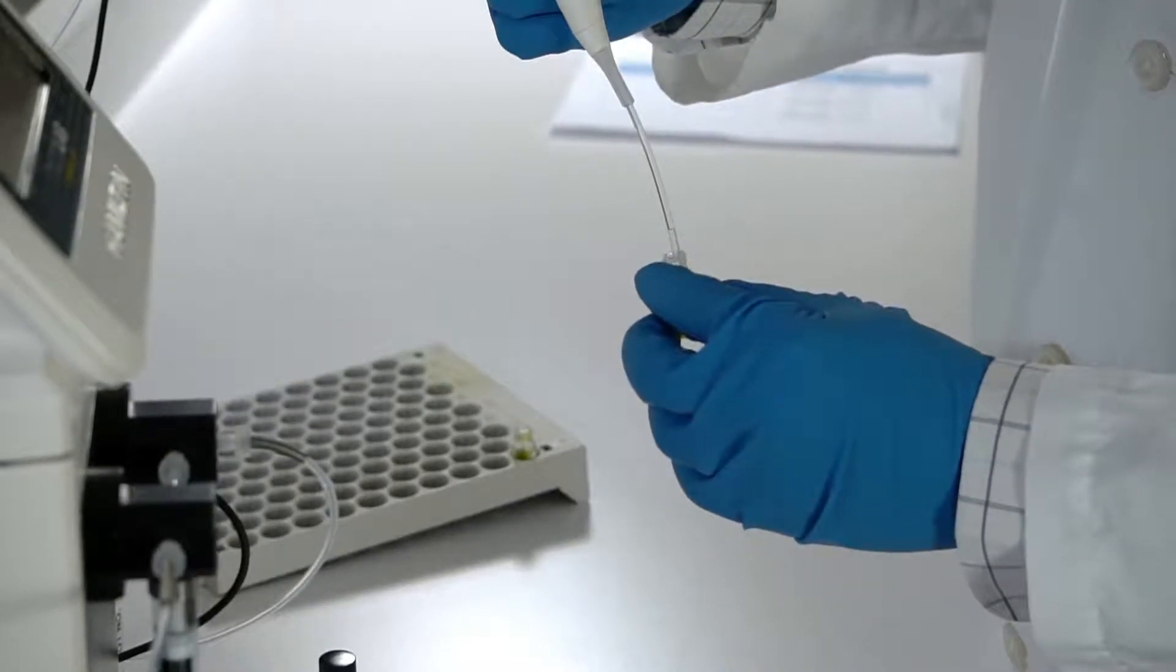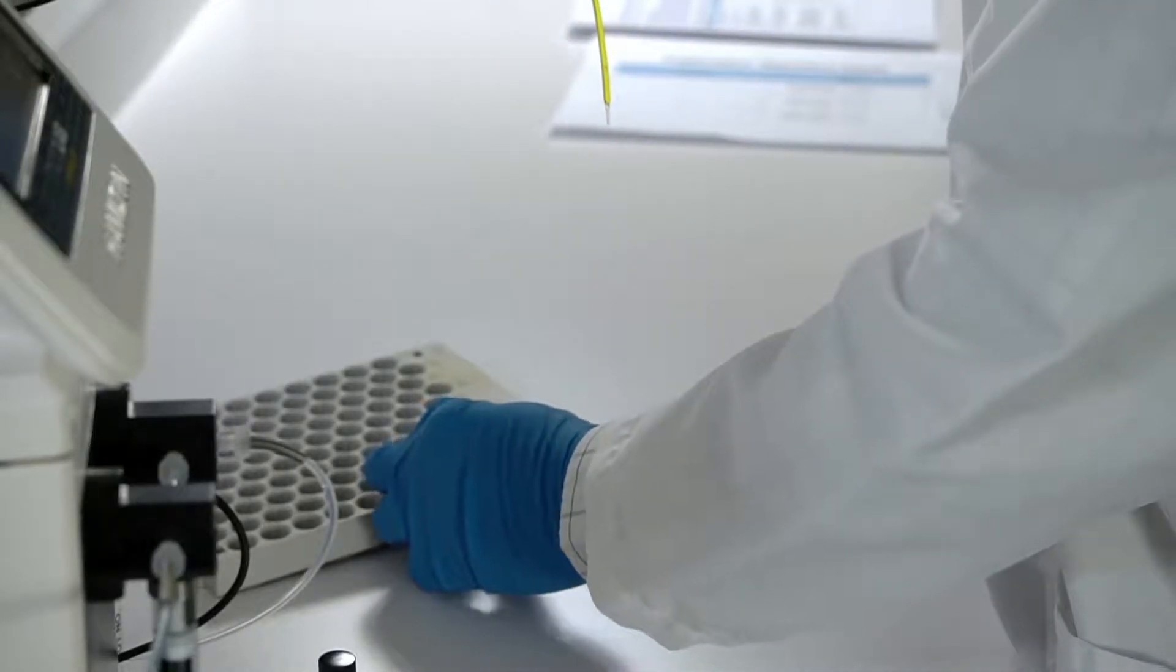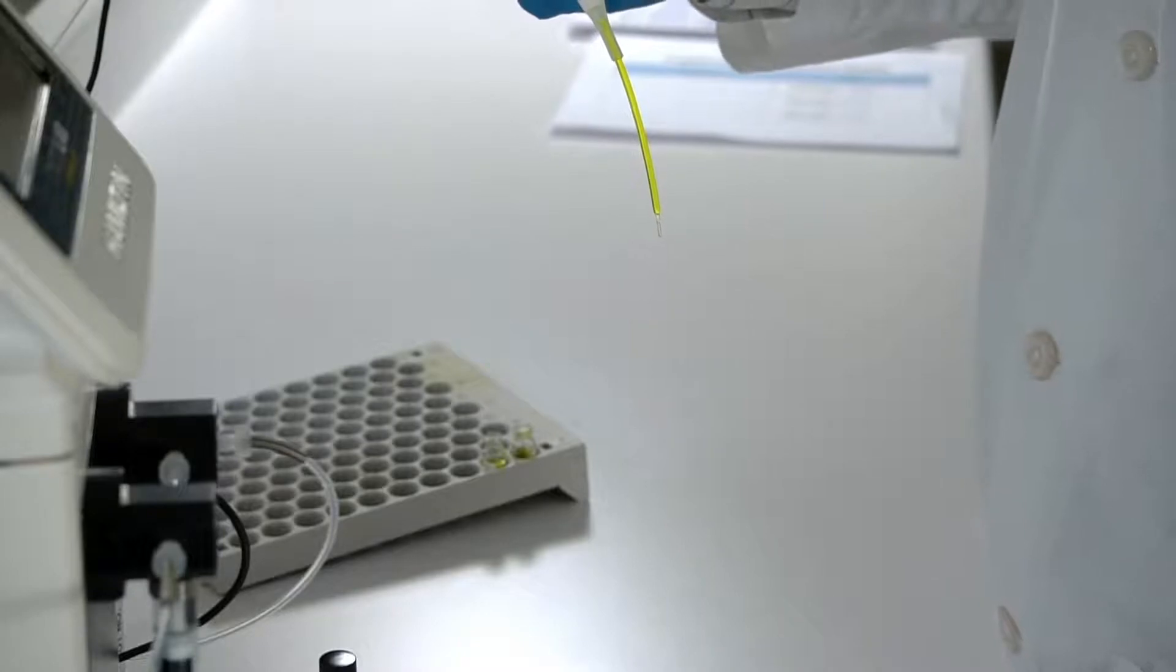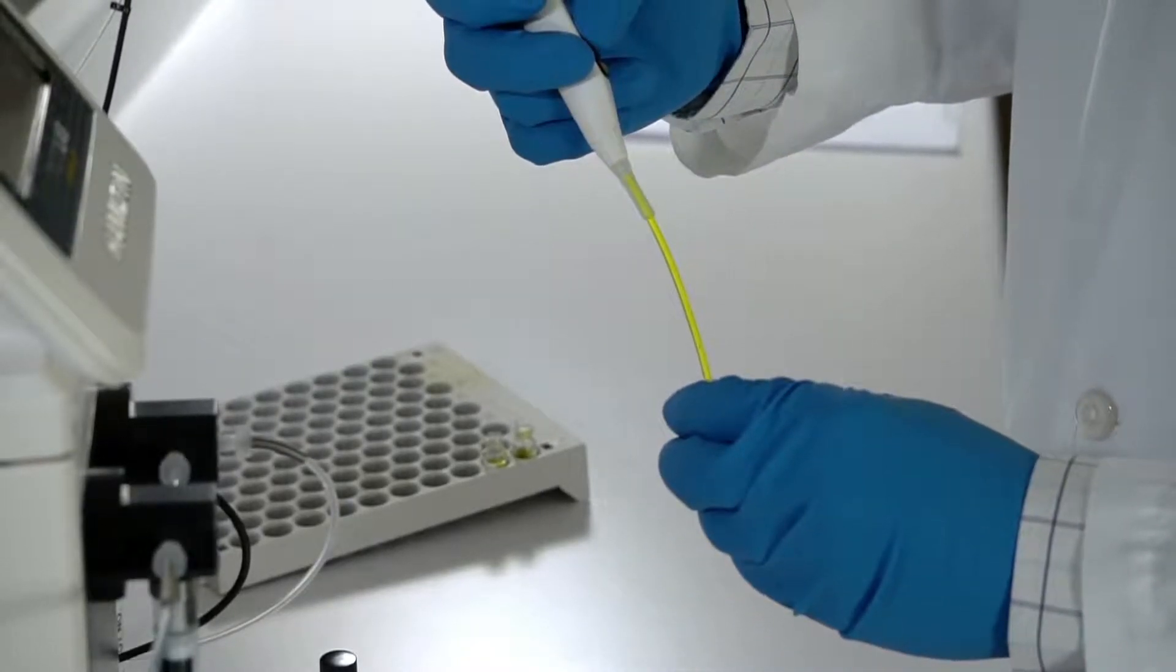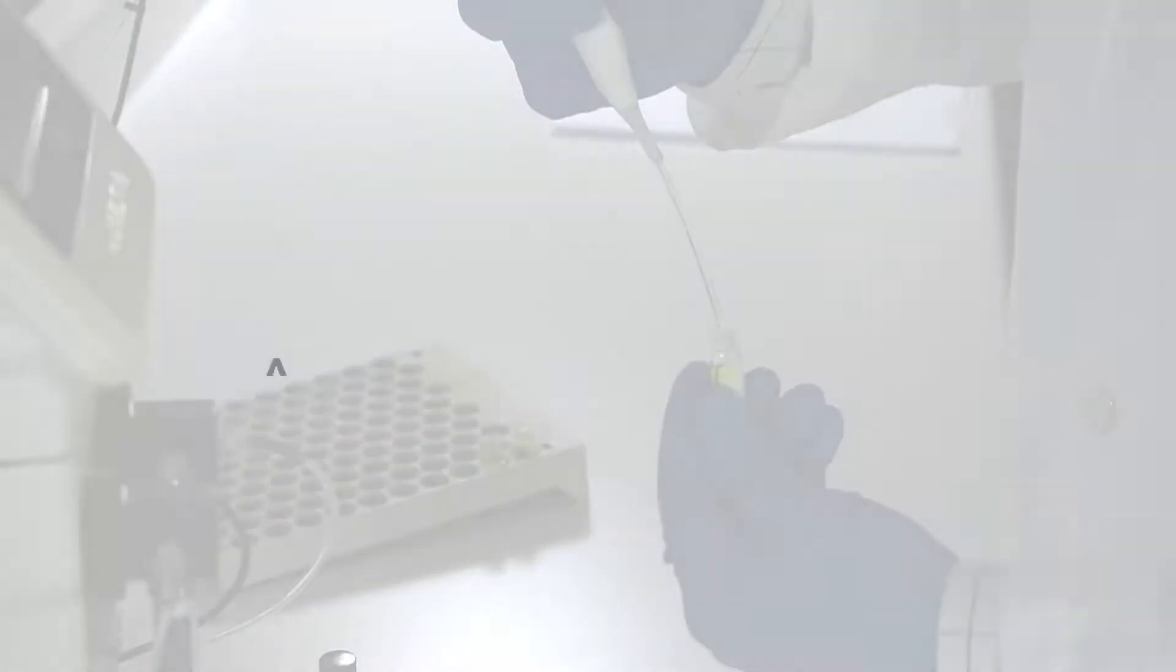After completing the first dilution, the diluted stock is used as the source for the second dilution step. The solution is aspirated into the probe and then transferred to another clean vial. This process is repeated to complete all dilutions for the desired standard curve.